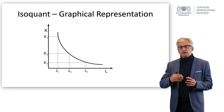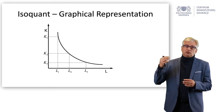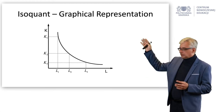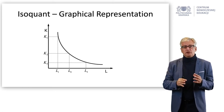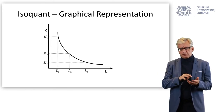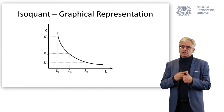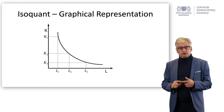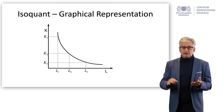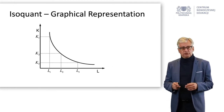We can consider a different technology — technology number two — which is based on less capital, K2, and more labor, L2, compared to the first one. We can think of a third technology, which uses just a little bit of capital, K3, and quite a lot of labor, L3. So you can see one technology that is highly capital-intensive (the first one), one that is highly labor-intensive (the third), and something in between that doesn't require that much capital or labor.